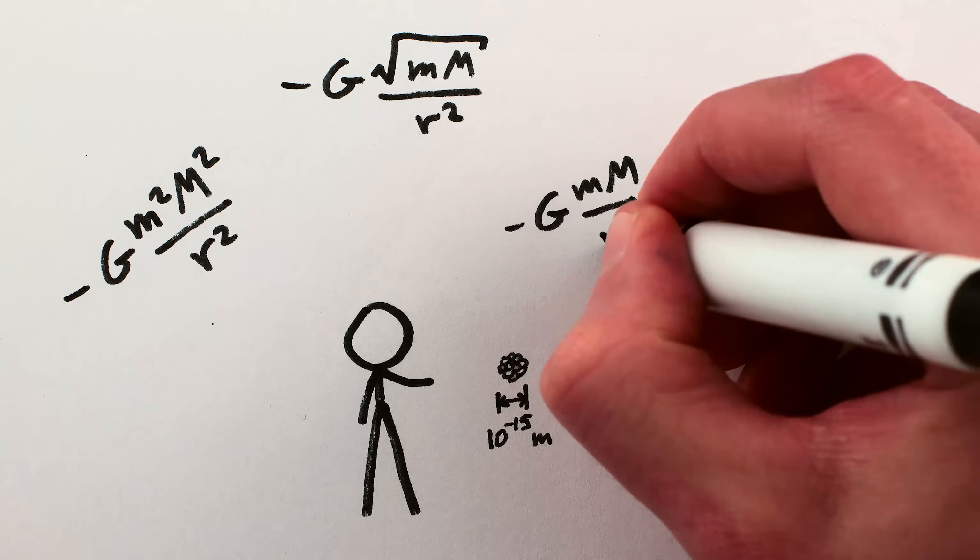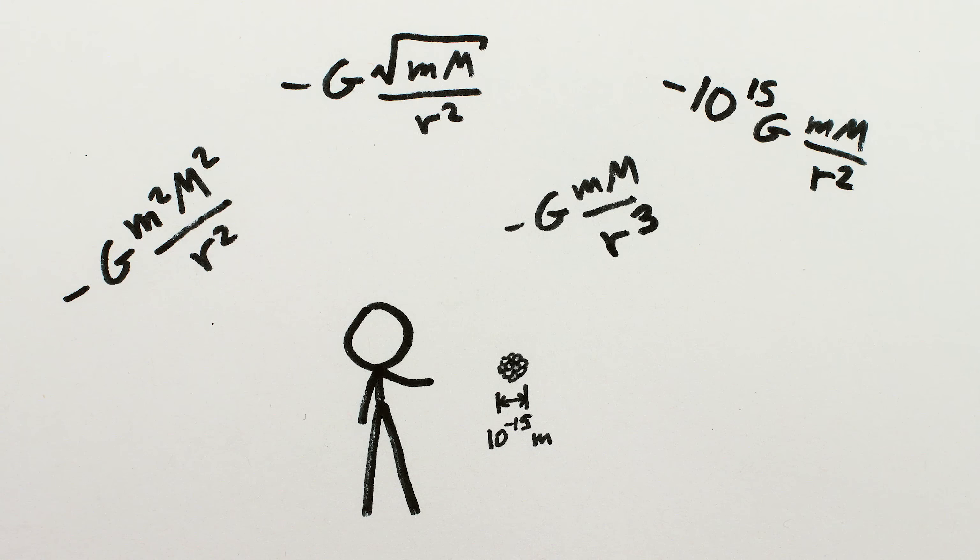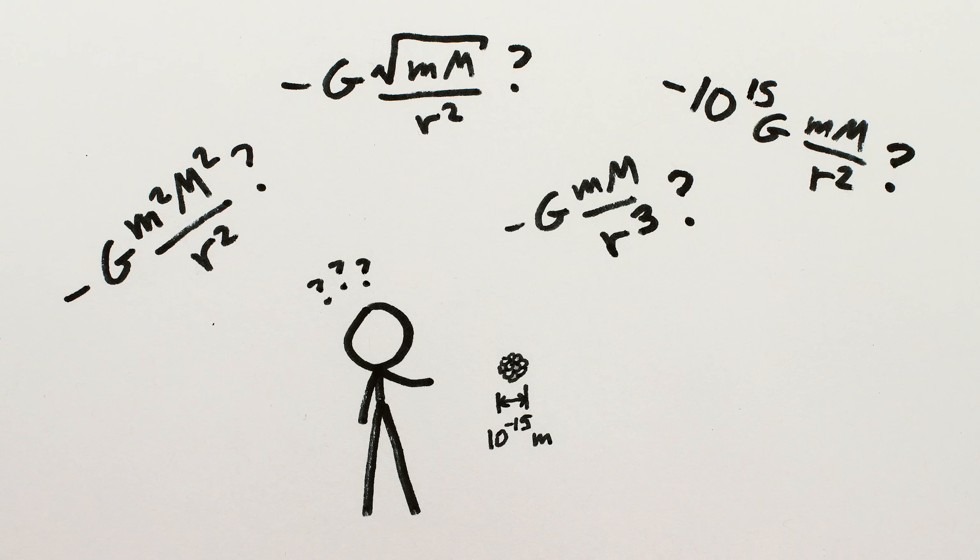Or G could be a million billion times bigger, and we wouldn't even know it. The fact that there's so much uncertainty about gravity at short distances means that a lot of interesting truths about our universe could be hiding under our very noses.